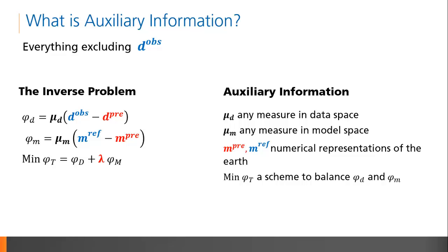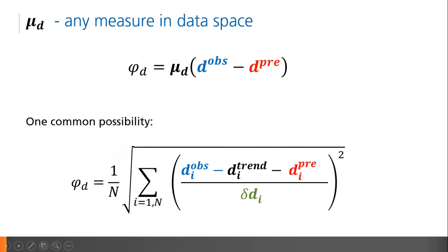Auxiliary information affects both the data misfit and the model norm, described by these non-exact expressions here. In truth, there's a lot more going on. An example of a piece of auxiliary information in the data space is a trend that is identified and removed by the user. The regional residual separation has a profound impact on the inversion result, and requires serious thought from the user.